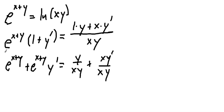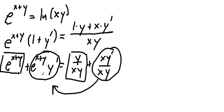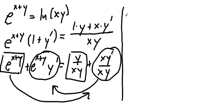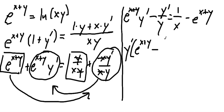The terms in boxes have no y primes and the terms in circles have y prime as a factor. Subtracting appropriately and canceling the x's and y's, I end up with e to the x plus y times y prime minus y prime over y equals 1 over x minus e to the x plus y. I factor out the y prime and get y prime times e to the x plus y minus 1 over y equals 1 over x minus e to the x plus y.